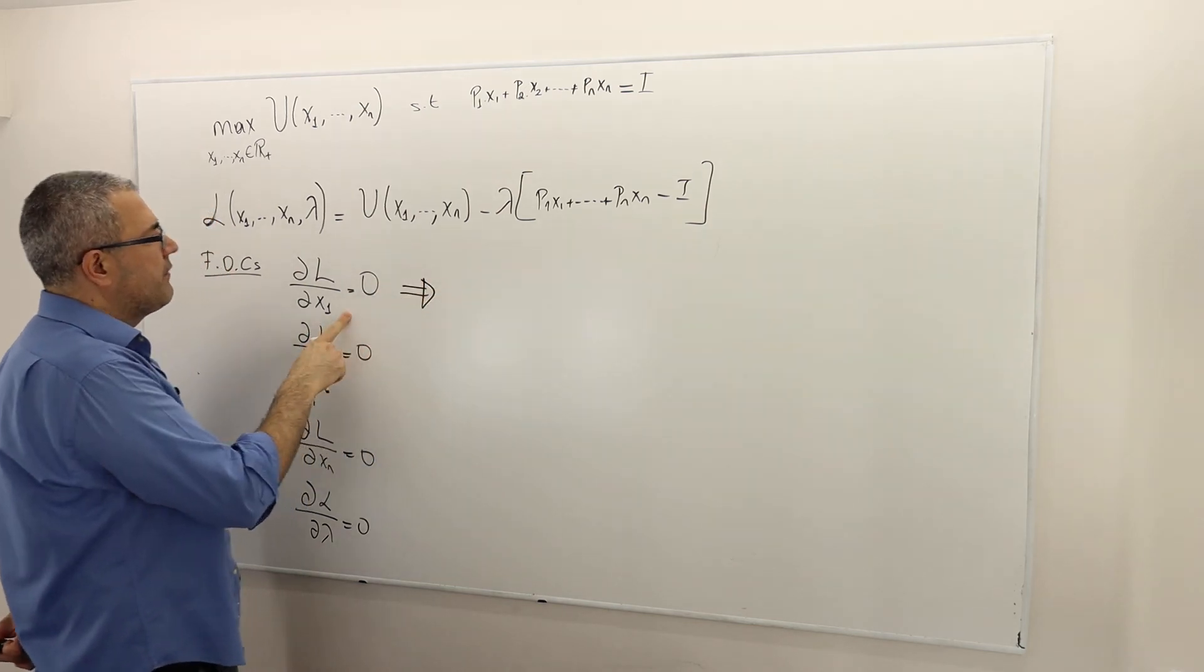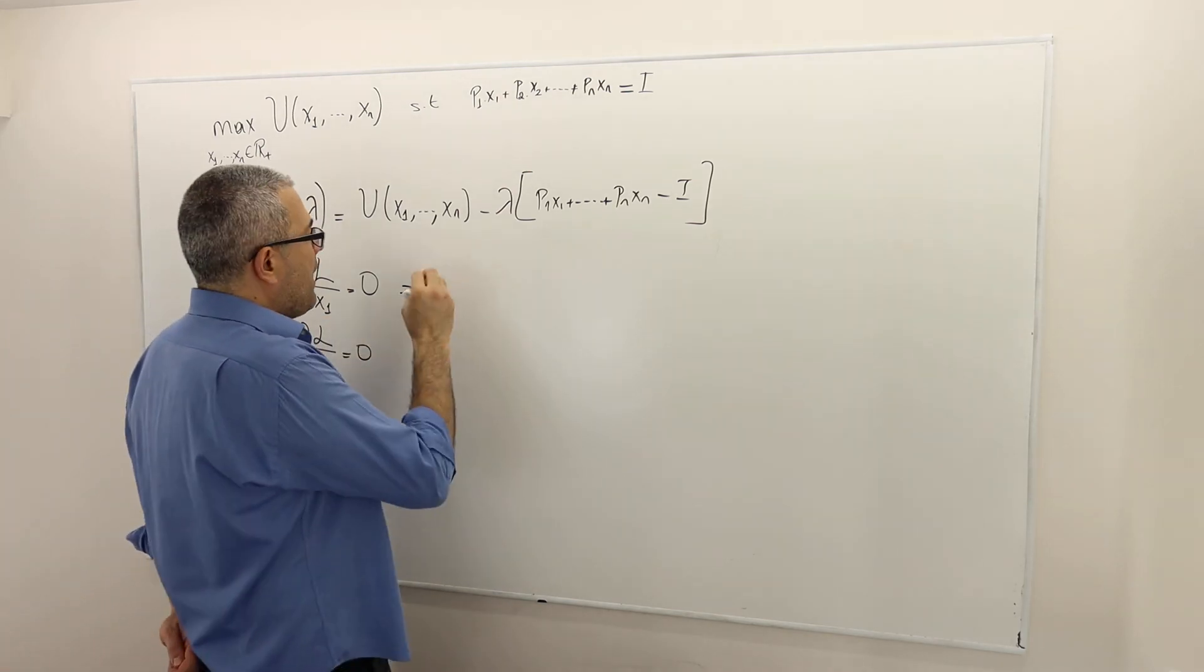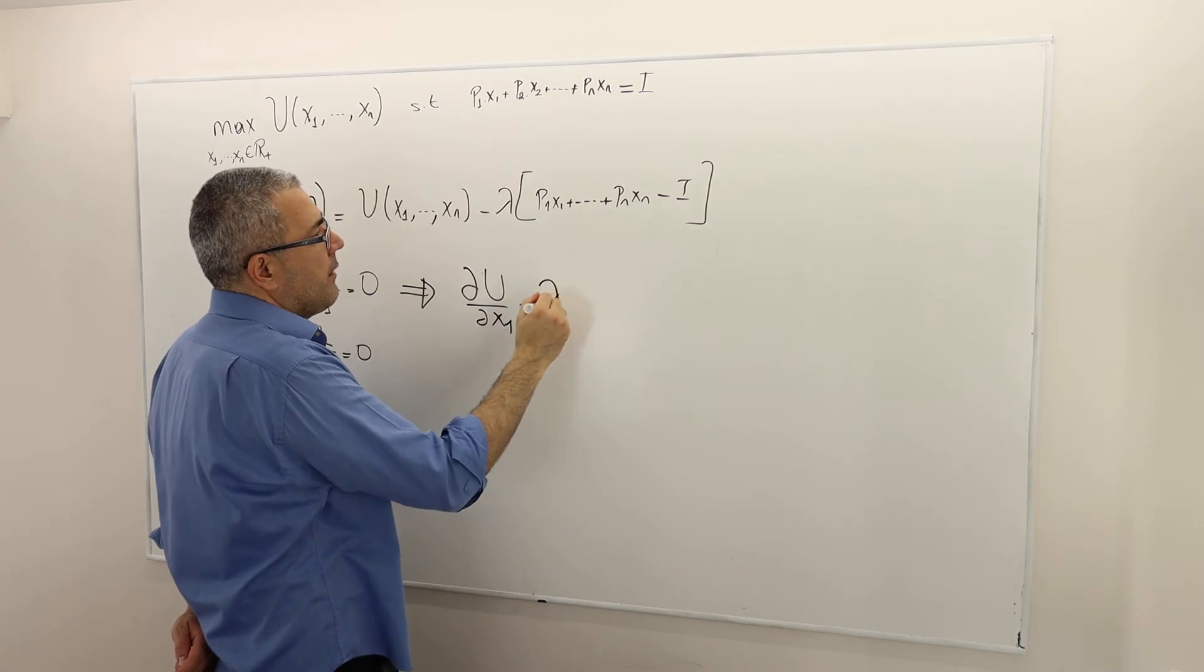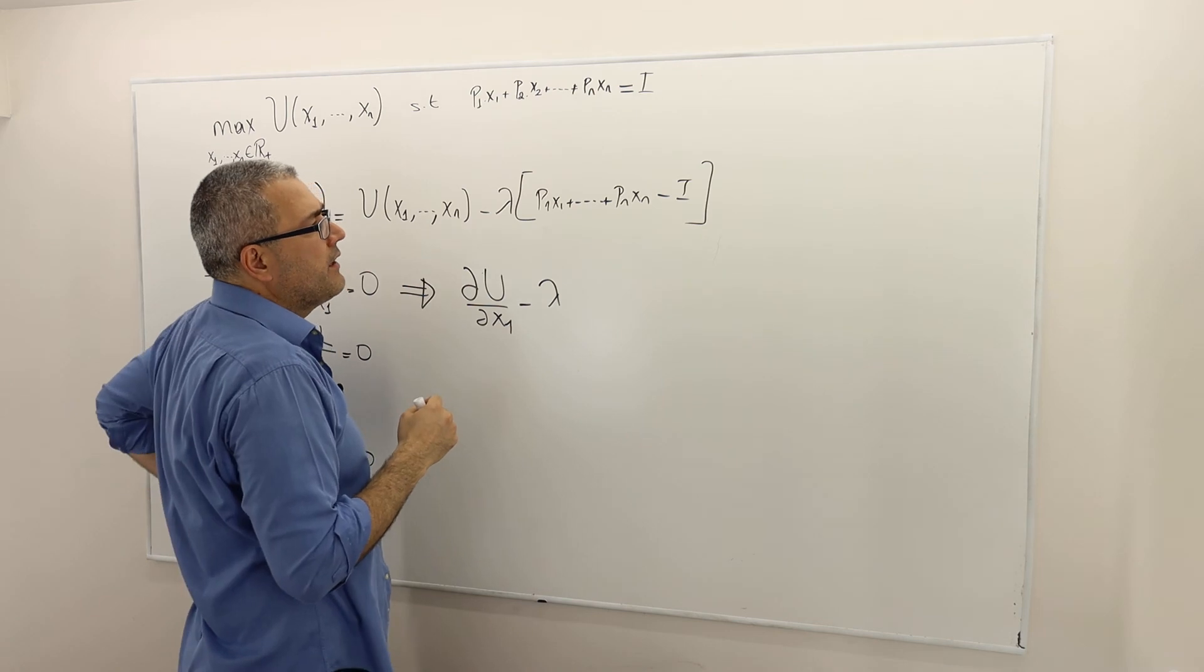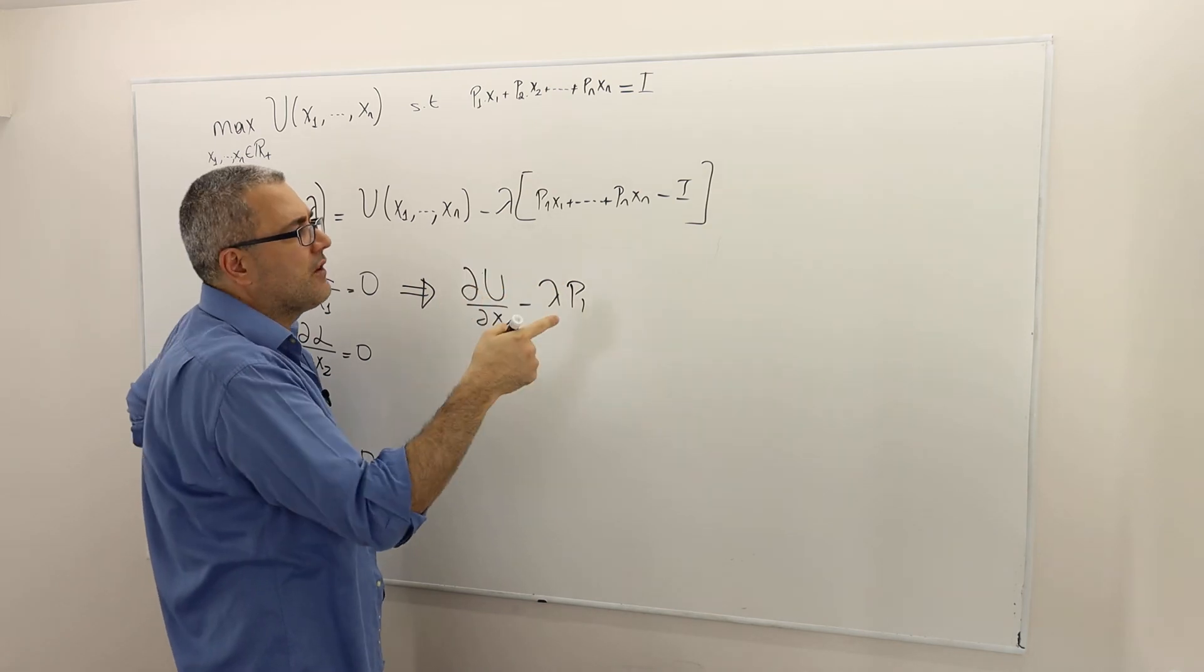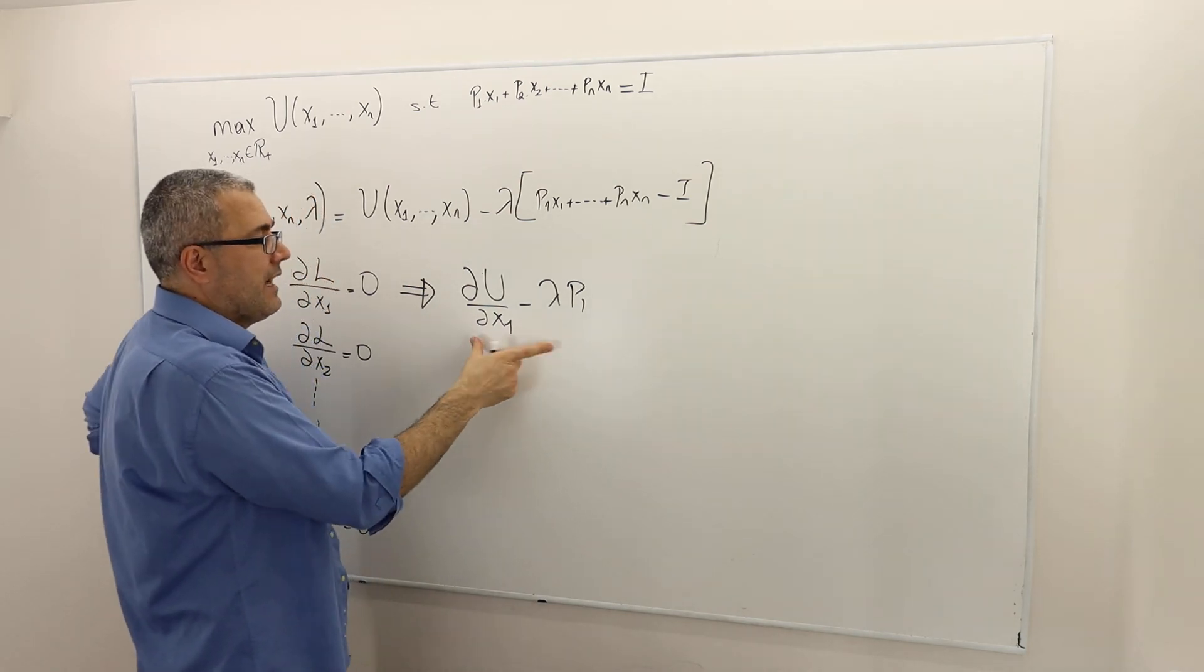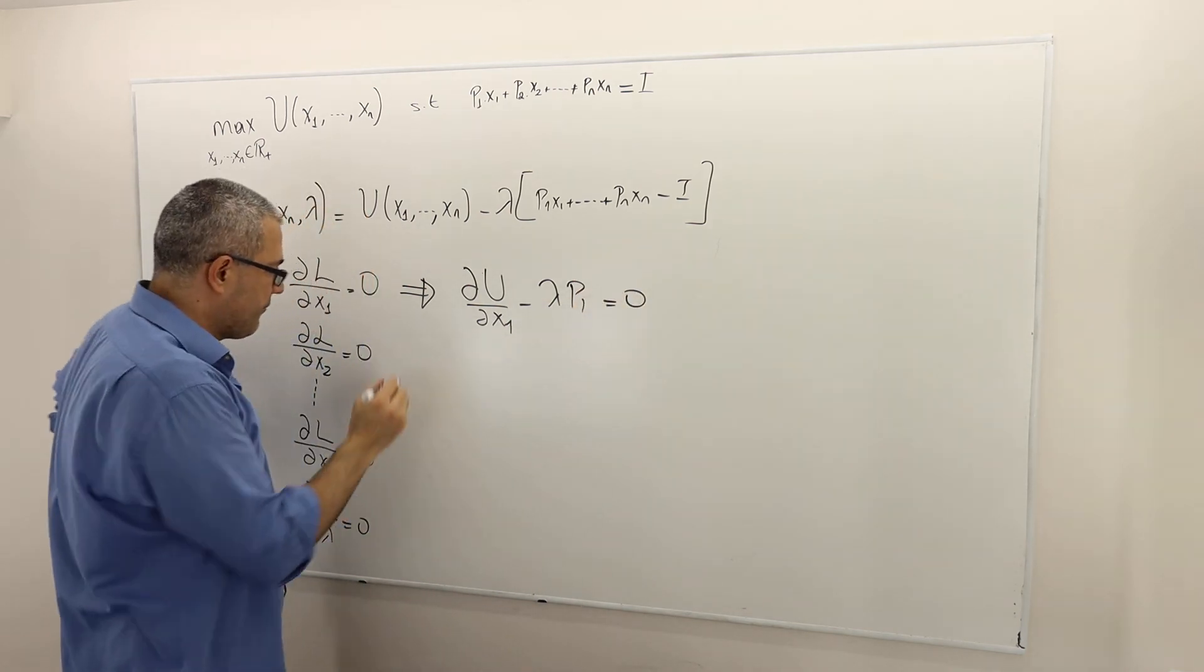So what does the partial derivative of the Lagrangian function with respect to x1 equals 0 mean? Well, it means the derivative of the first part, so it's ∂U/∂x1 minus lambda times the partial derivative of the constraint with respect to x1, which is basically p1 because all the other parameters, pi, xi, are all constant. And income is also constant when we take the derivative with respect to x1. So that's the Lagrangian's partial derivative with respect to x1, and that must equal 0.